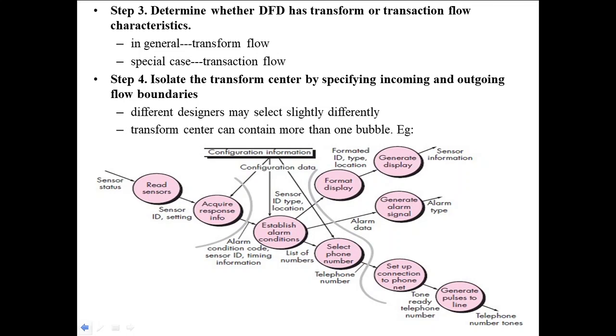Step 4: I'll select the transform center by specifying incoming and outgoing flow boundaries. We are splitting the outgoing boundary and incoming boundary in the diagram. Different designers may select slightly different transform centers. The transform center can contain more than one bubble.